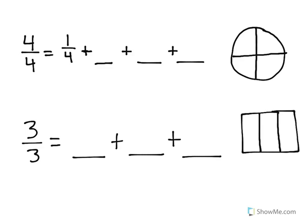Now what we have over here at the top is an equation. 4 fourths is equal to 1 fourth plus blank, plus blank, plus blank. And we're going to take a look at the visual over here to help picture this.